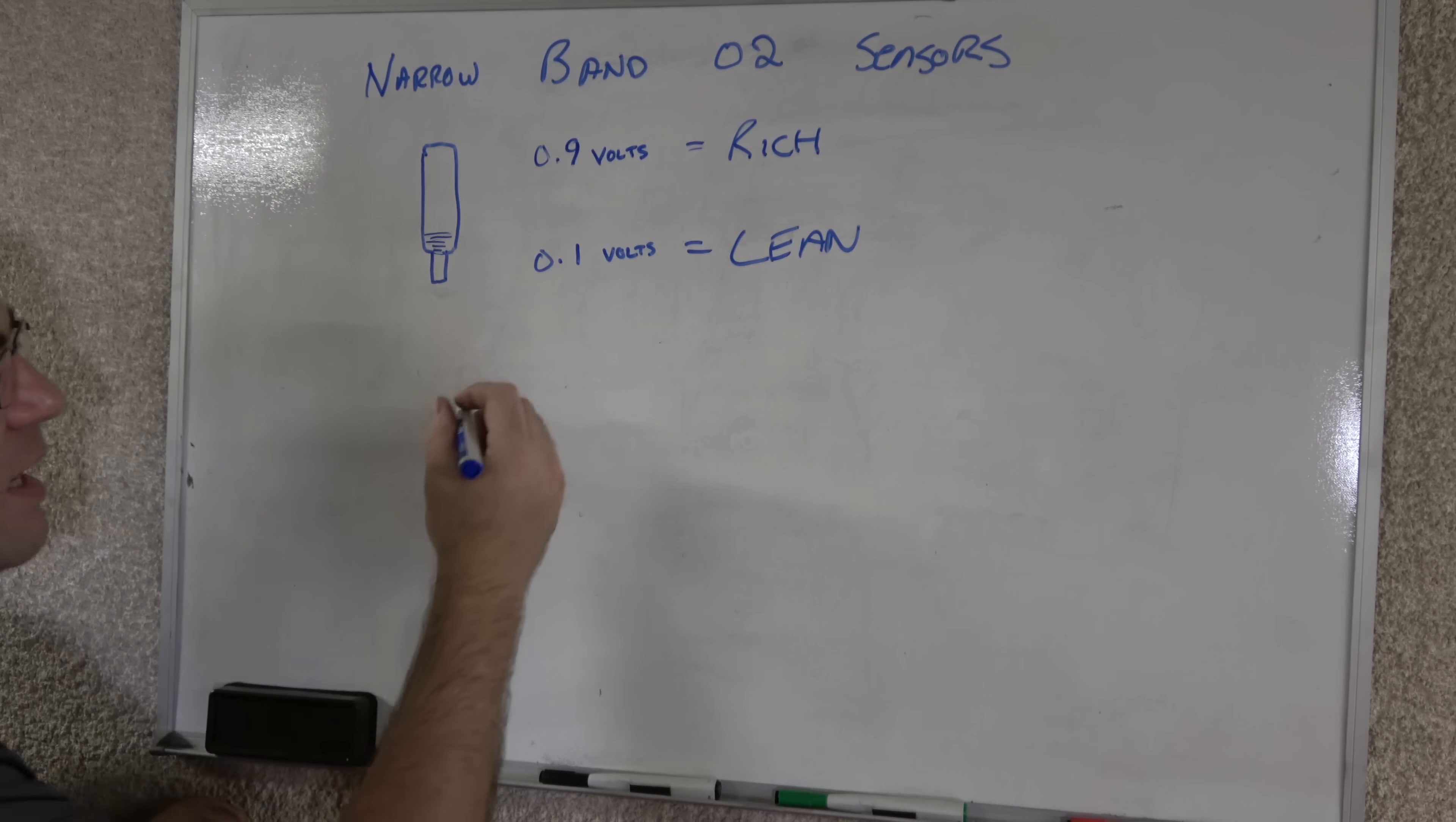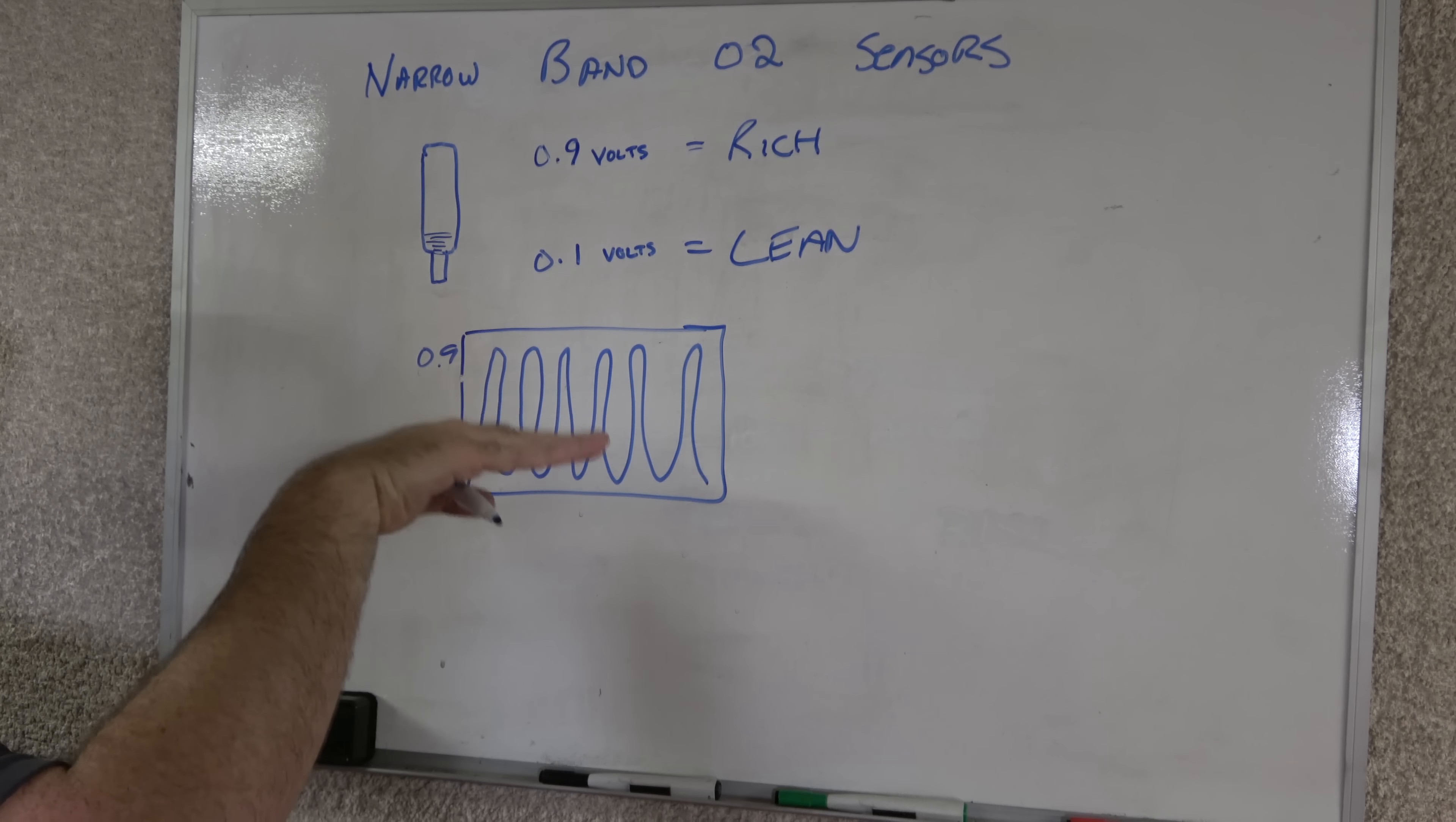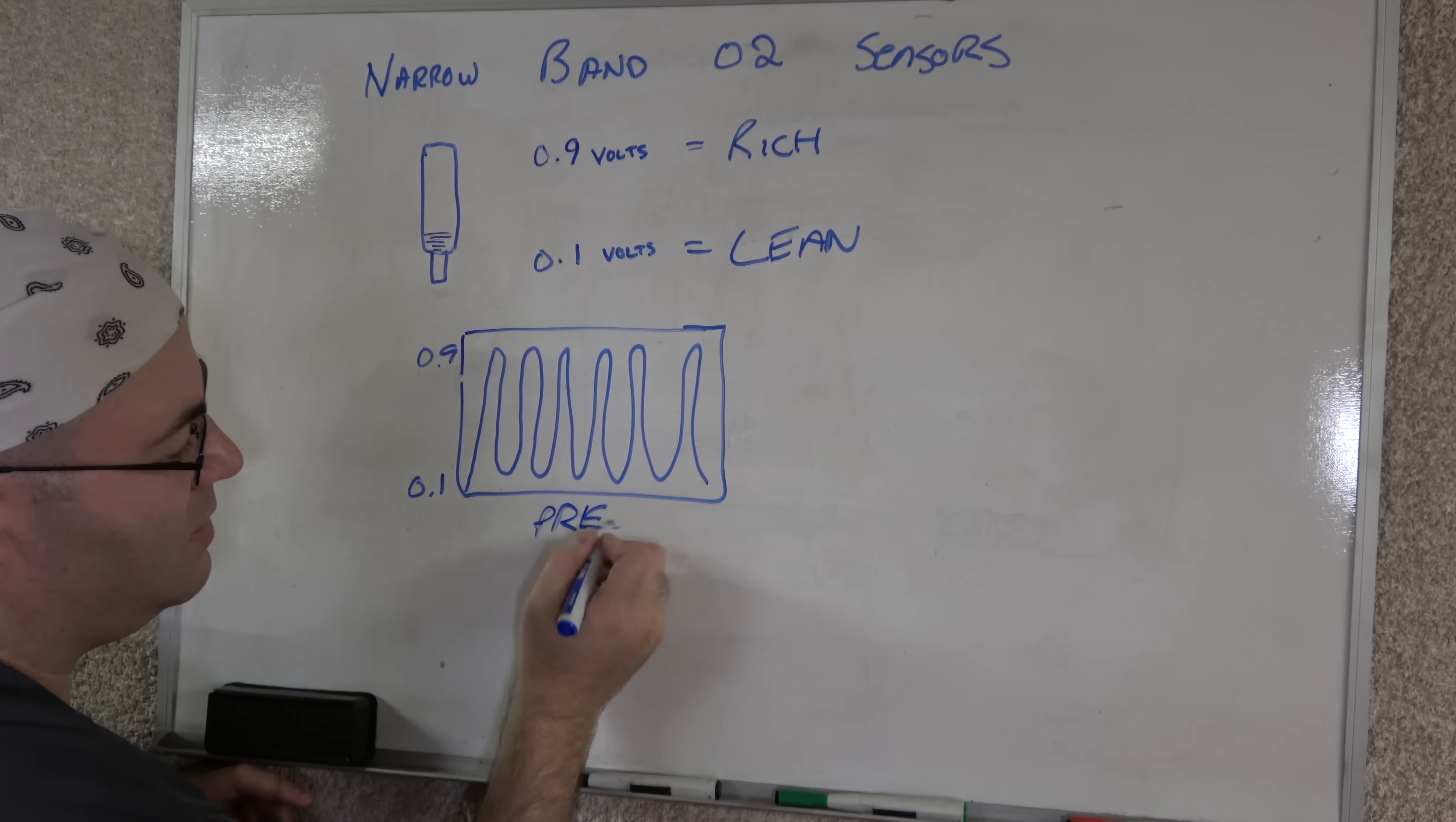And the job of the downstream sensors is actually just to tell the engine computer if the catalytic converter is working properly. So typically on an upstream sensor, you'll have this little graph right here. When an upstream sensor here, this is going to be 0.9, this is 0.1. As the engine is running, you're going to see the upstream sensor cycling from rich to lean, rich to lean. This is the engine computer is doing this. It's varying the fuel just a little bit in order to get a reading off of that sensor. And it kind of helps it, it helps it sort of balance on the scale a little bit. It kind of helps it balance like that. So that's typically going to be what your pre-sensors look like.